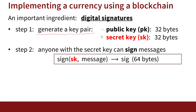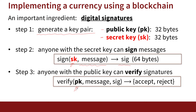Step one: generate a key pair. Step two: anyone who has the secret key can sign arbitrary messages using that secret key. When you sign a message, the result is called a signature — it's just a 64-byte string, not a physical signature. Once the signature is generated, anyone who has the public key can verify it using a verify algorithm that takes the public key, the message, and the signature, and outputs either accept or reject. Only someone with the secret key can produce a signature that the verification algorithm accepts as valid.